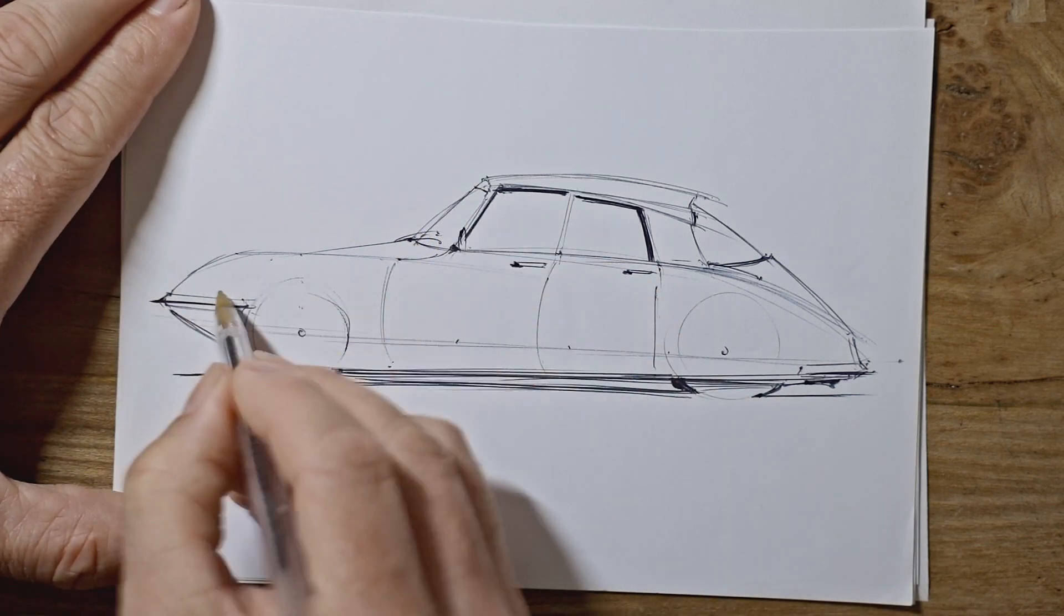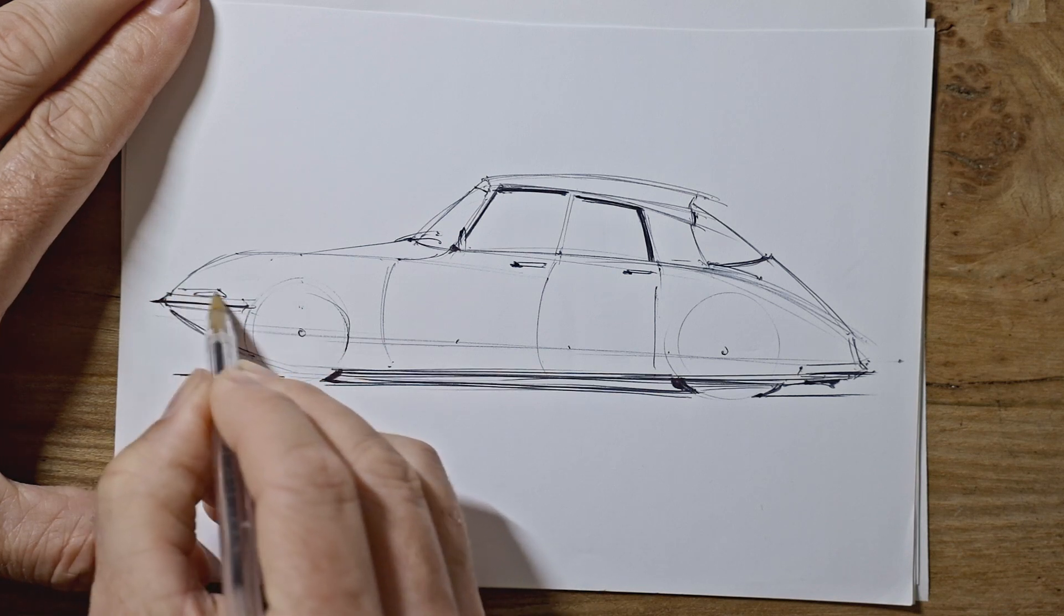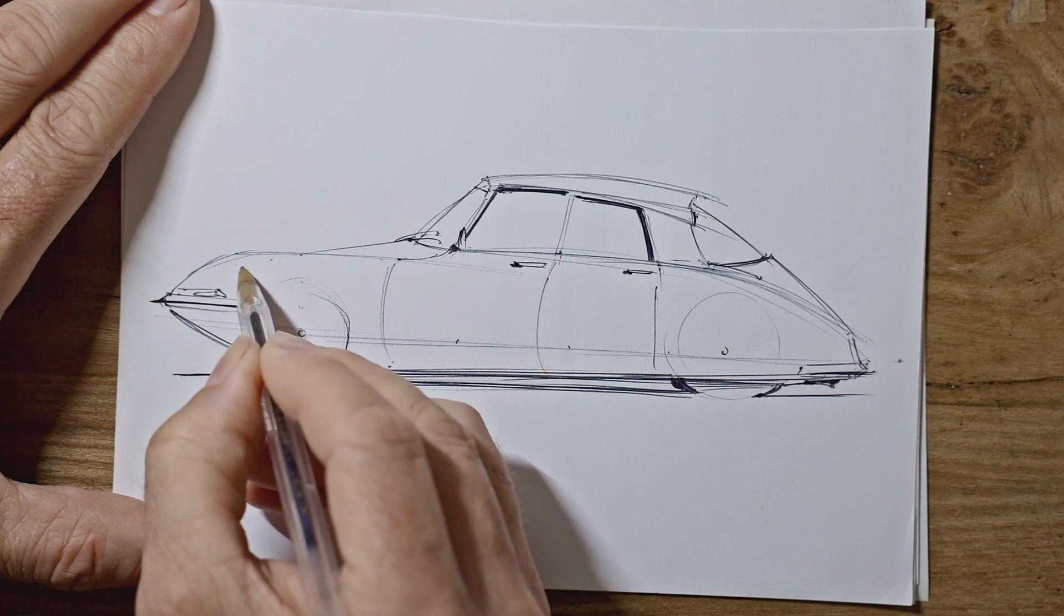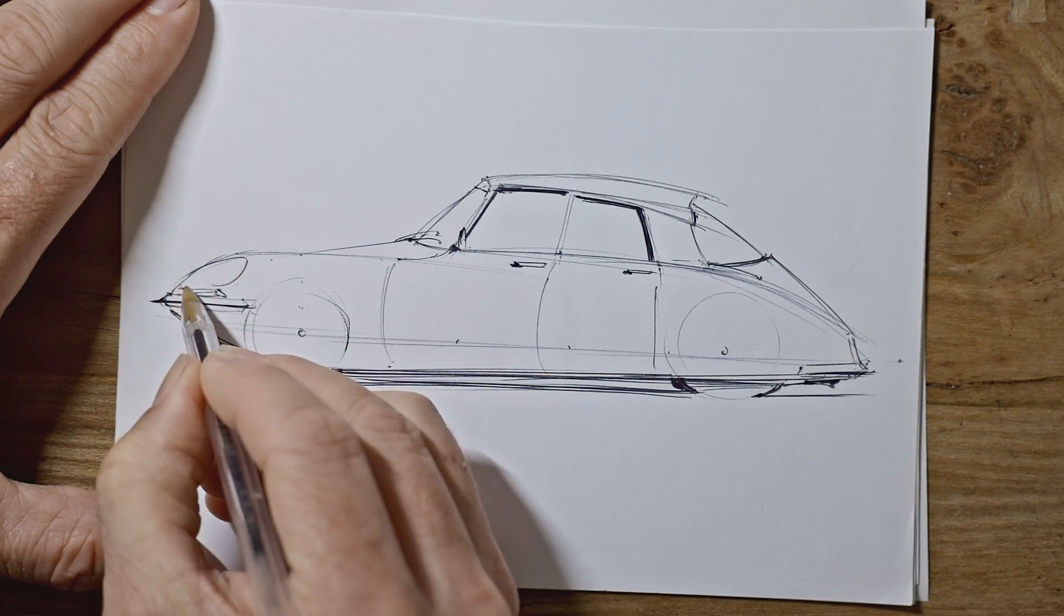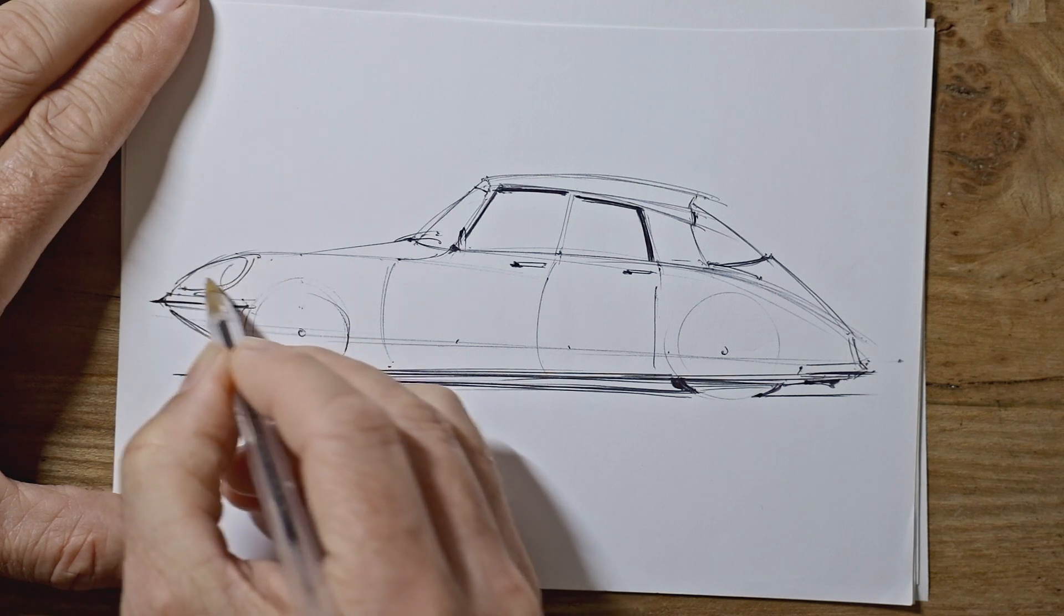And some windscreen wipers maybe. Oh and we must do the lights. So we've got some smaller indicators down there. And then some much larger sort of nice fared in lights here.